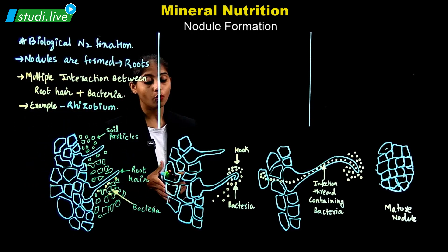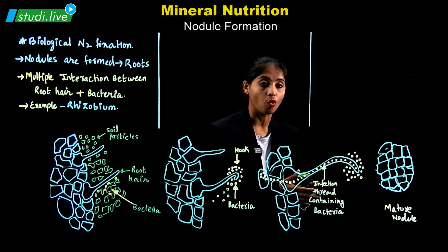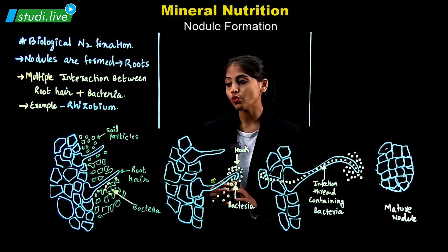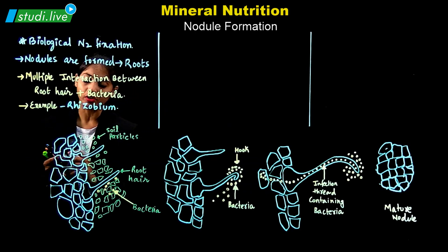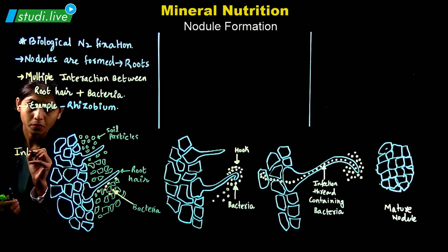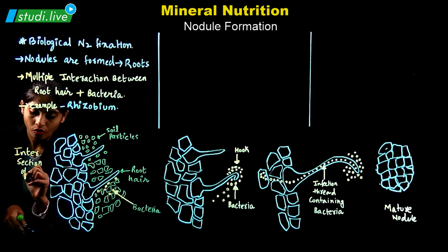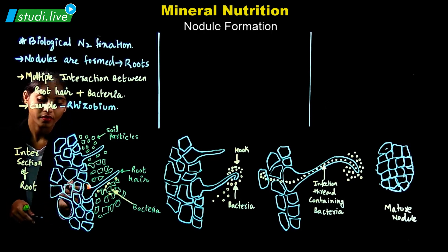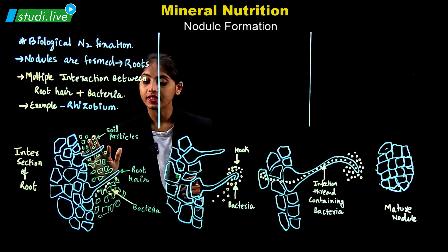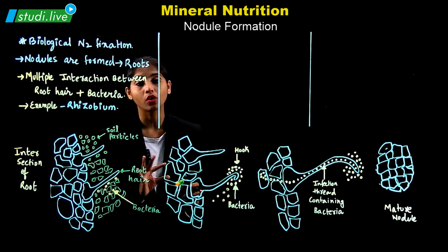Now, with the help of a diagram, I would like to show you the different stages involved in the formation of the mature nodule. What I have drawn here is the part of the cross-section of the root, where we can see the presence of root hair — the extension coming out from the root.